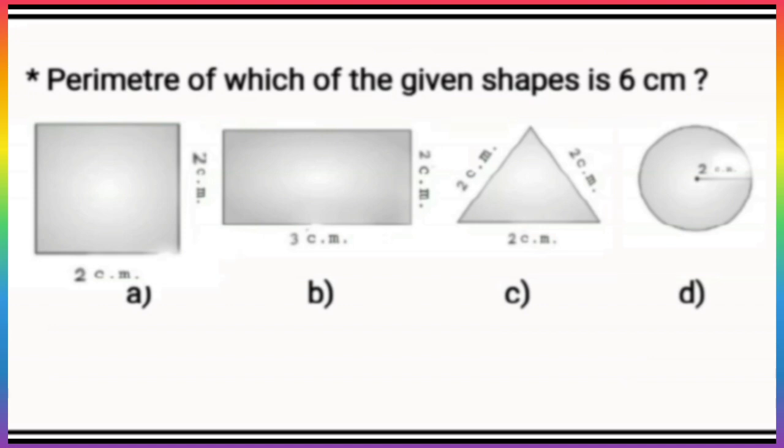perimeter is the sum of all sides of the figure. So starting from option A, we find that its perimeter becomes 8 centimeters, which is incorrect. Option B: if we add all the sides of the rectangle, it becomes 10 centimeters, but we need 6 centimeters. Now let's move to option C: 2 centimeters, 2 centimeters, and 2 centimeters. So the perimeter becomes 6 centimeters. This is the perimeter we want.